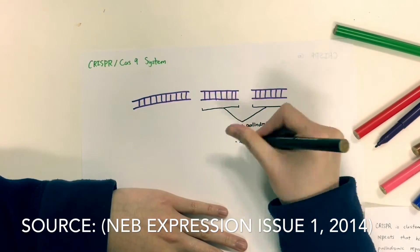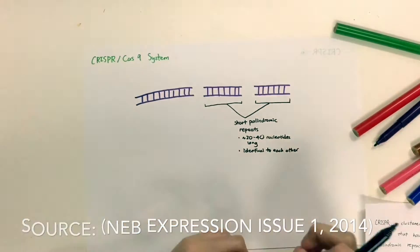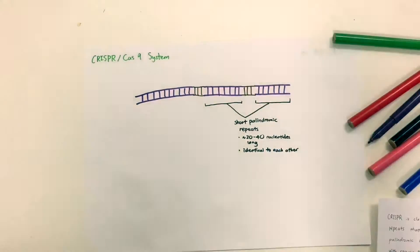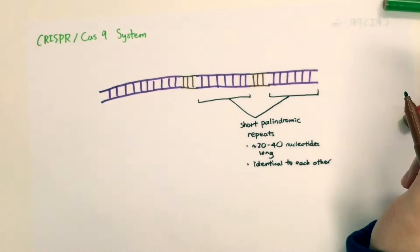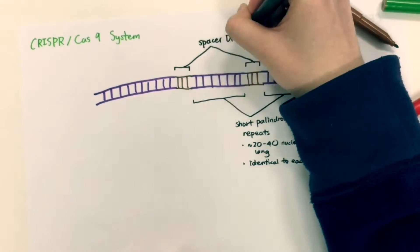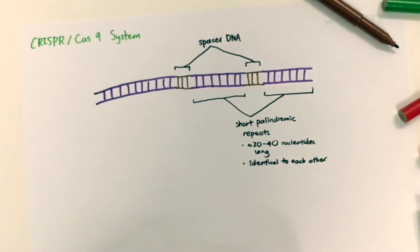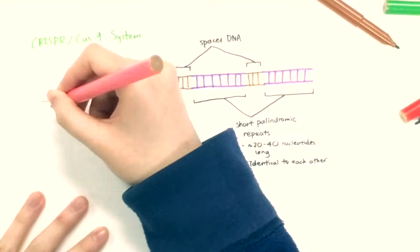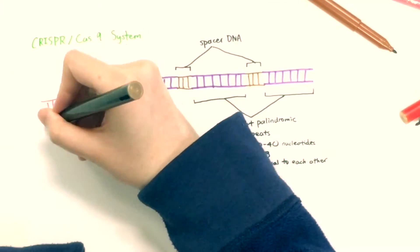These short palindromic repeats are 20 to 40 nucleotides long and are all identical. They are interspaced with spacer DNA. Spacer DNA are not identical to each other. CRISPR is associated with Cas genes.